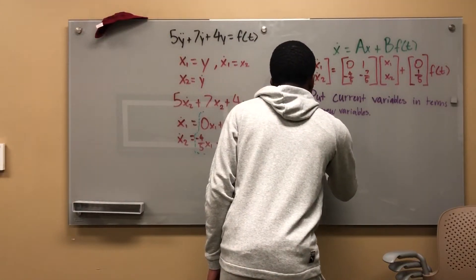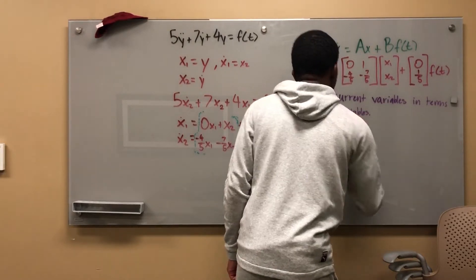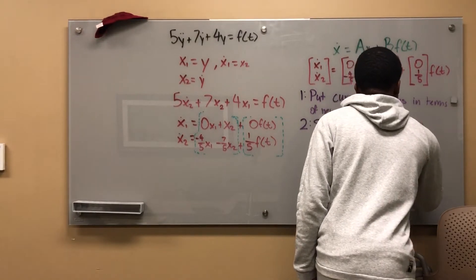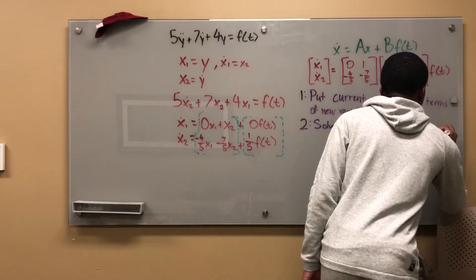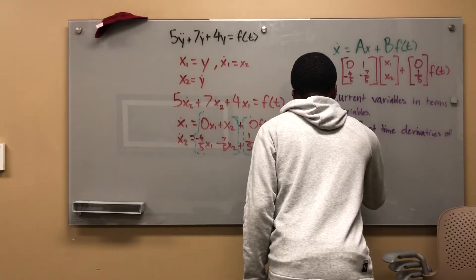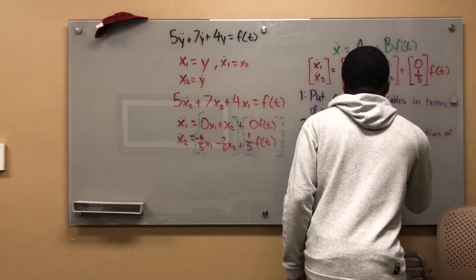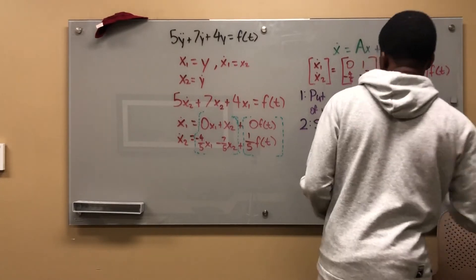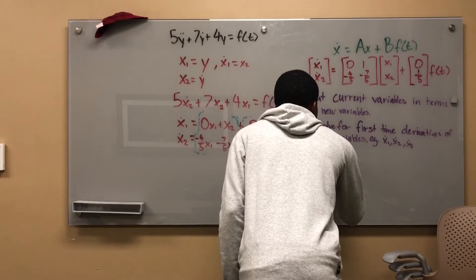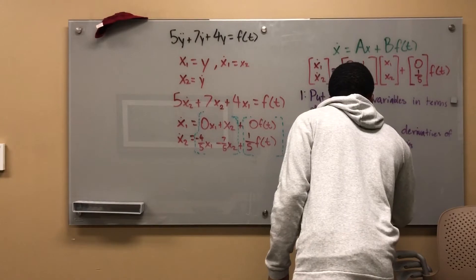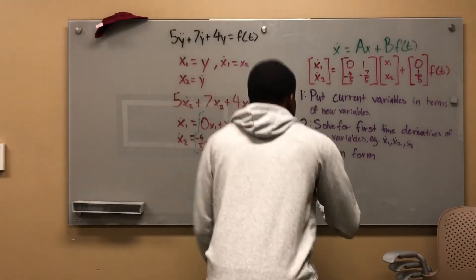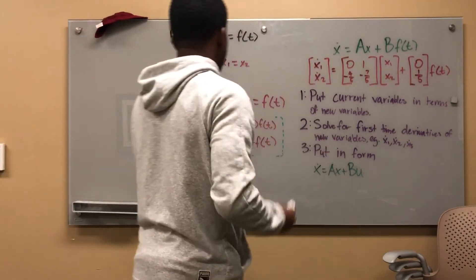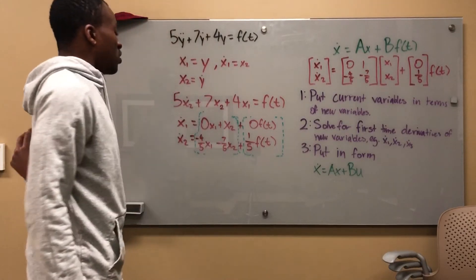Step 2, solve for first time derivatives of new variables, for example x_1 dot, x_2 dot, x_3 dot, etc. Step 3, put in state variable form. I'll write this again: x_dot = Ax + Bu. This being u. Those are really all you need.